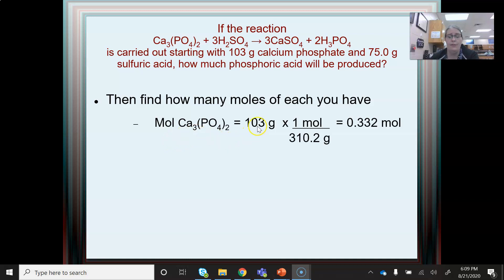So that means the next thing I will need to do is find out how many moles of each of these starting materials I have, because we always do stoichiometry problems in moles. Never, ever, ever in grams. So I'll take the 103 grams, of course put the grams on the bottom so my grams are on opposite sides of the fraction bar. And I find that I have 0.332 moles of calcium phosphate. And I'll take this 75 grams and divide that by the molar mass and get 0.765 moles of sulfuric acid. Now I have the information I need to put into a RECA table, which is always done in moles and never in grams.